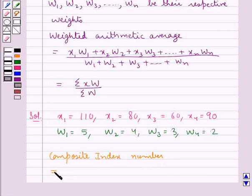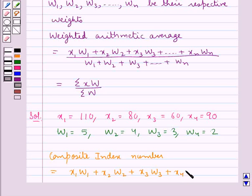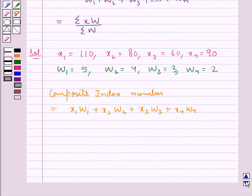is equal to x₁w₁ plus x₂w₂ plus x₃w₃ plus x₄w₄ and this whole upon w₁ plus w₂ plus w₃ plus w₄.